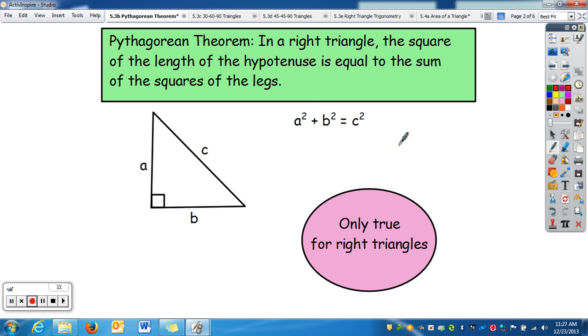Let's review what the Pythagorean Theorem is. In a right triangle, the square of the length of the hypotenuse, c, is equal to the sum, so adding together, the squares of the two legs, a and b. Therefore, we get a squared plus b squared equals c squared. This is only true in right triangles.